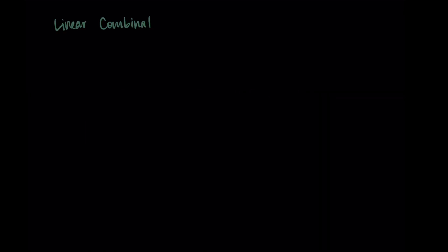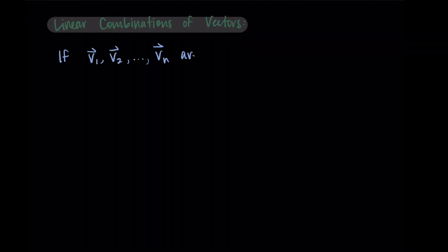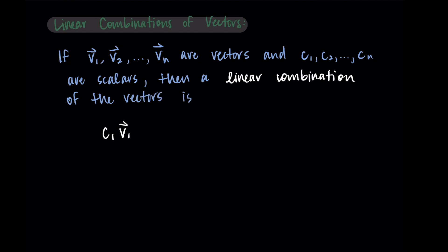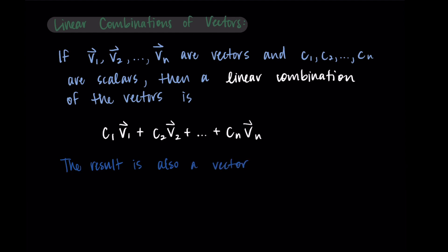Hi, and welcome. In this video, we're going to talk about linear combinations of vectors. So if we start with some vectors v1 through vn, and then we take some scalars c1 through cn, then a linear combination of the vectors is: c1 times v1, plus c2 times v2, and so on, until we add cn times vn. This linear combination takes all of the vectors, multiplies each by a scalar, and the result is also a vector.